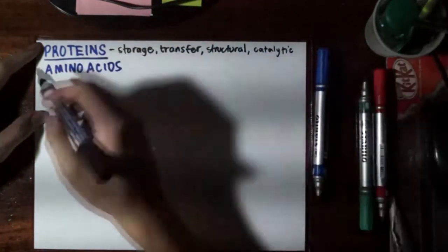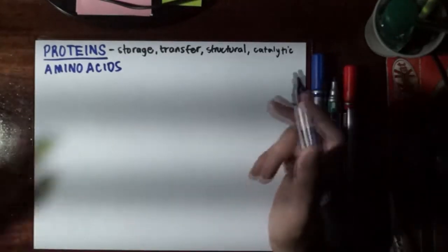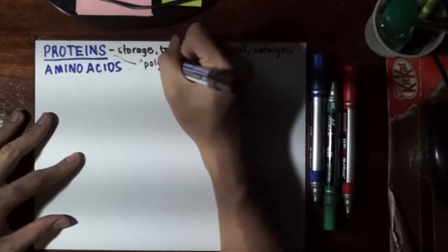These are the building blocks, or the monomers, that when you weave them up together, you get a protein, or sometimes you can call it a polypeptide.